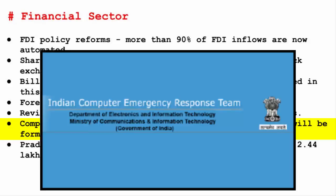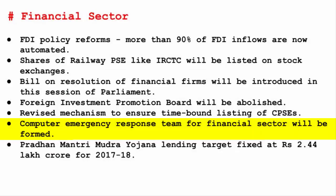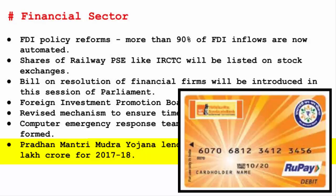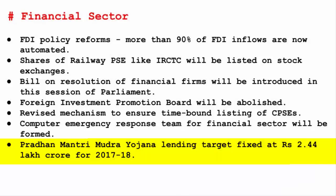Computer Emergency Response Teams for the Financial Sector will be formed. These are expert groups handling computer security incidents under the Ministry of Electronics and Information Technology. Since everything is going digital in the financial sector, there is growing concern in terms of cyber security. Pradhan Mantri Mudra Yojana's lending target is fixed at Rs. 2.44 lakh crore for 2017-18. The main idea is to give financial support to Dalits, Tribals, Backward Classes, Minorities, and Women by lending them money at lower interest rates so they can start enterprises — acting as a step towards the upliftment of backward communities.